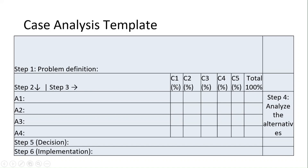You see here a percentage — this is the weight for each criterion that you want to give based on the case. Step four is analyzing the alternatives. Against each criterion, you need to analyze and score each alternative. In these cross-sections, you have to assign certain scores.